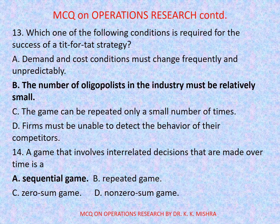Question number 14: A game that involves interrelated decisions that are made over time is a — options are: a) sequential game, b) repeated game, c) zero-sum game, d) non-zero-sum game. Correct option is a) sequential game.